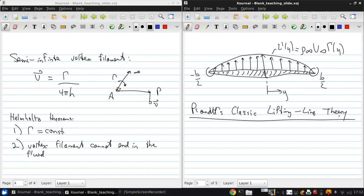If we have a bound vortex with strength gamma, this experiences a force L prime equals rho infinity V infinity gamma from the Kutta-Joukowski theorem.